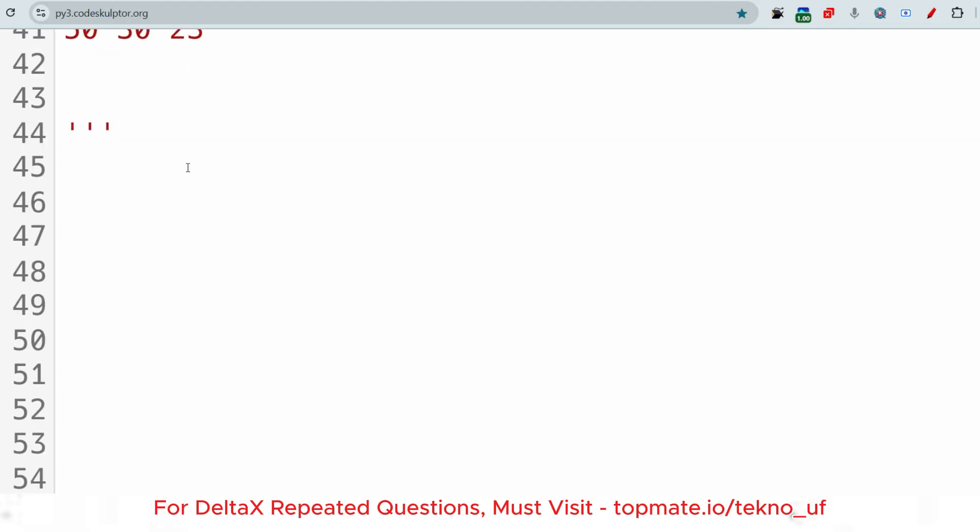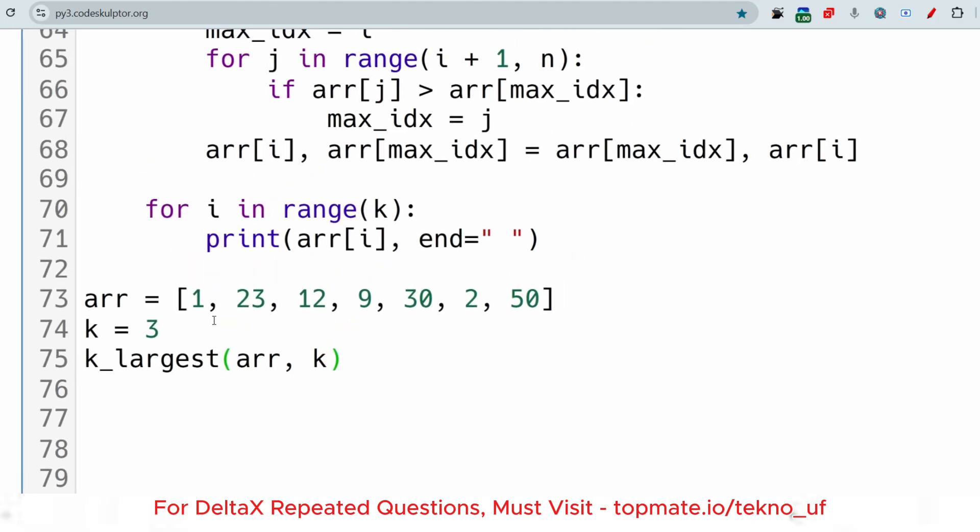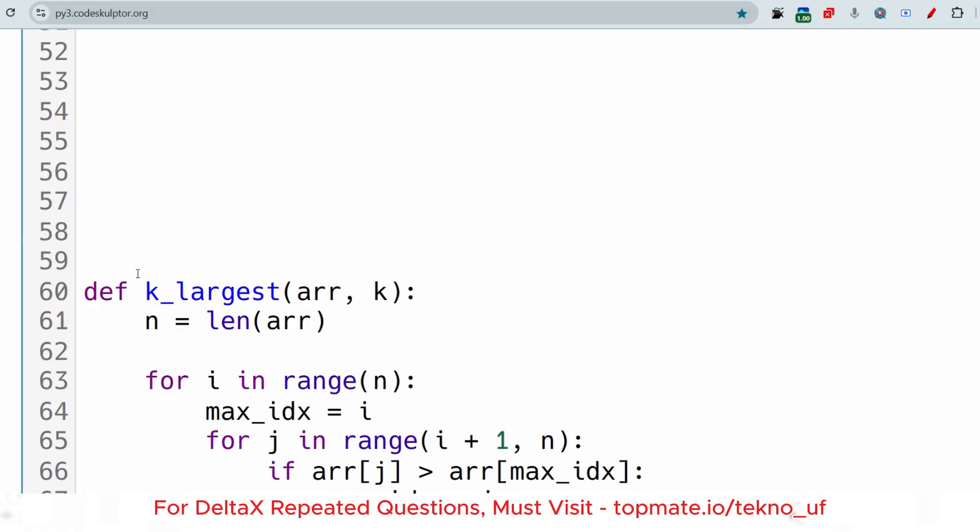The answer is shown to you here. At first the value of K - this is the driver code, so values of array are hard-coded, value of K is also hard-coded. We have to print K largest - this is the function name and these are the arguments: array and K. Let me show you the implementation of the function. k_largest is taking the length of the array, n equals length of the array.